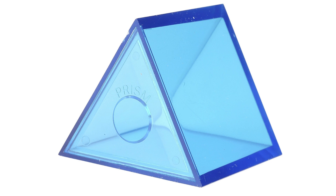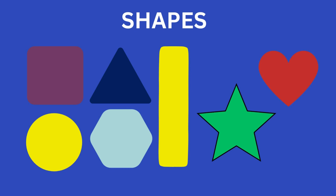Do you know what this is? Yes, this is a prism. It is a 3D object. Let me tell you what 3D and 2D shapes are. See the shapes like square, circle, triangle, rectangle, hexagon, heart — these are flat, so they are called 2D objects.